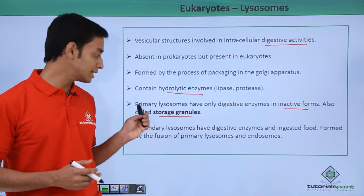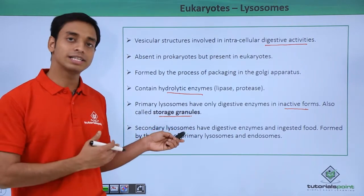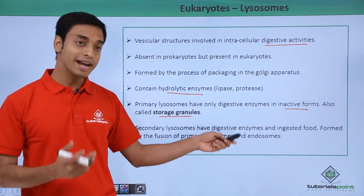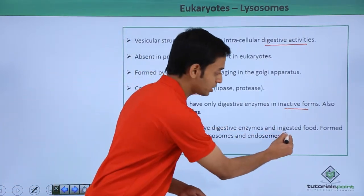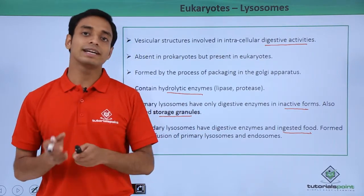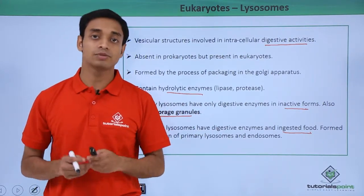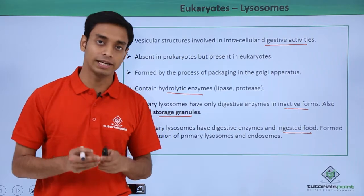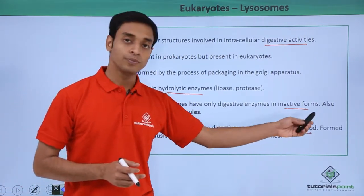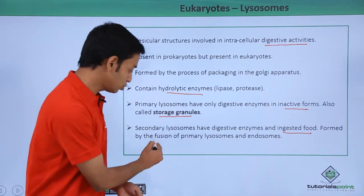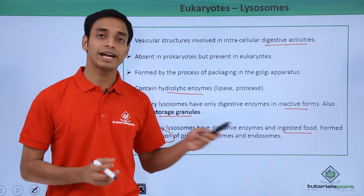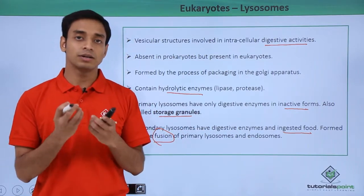The second type is known as secondary lysosomes. These also have digestive enzymes and additionally have ingested food. They may also have microorganisms which are to be digested or killed. Secondary lysosomes are formed by the fusion of the primary lysosome as well as the endosomes.